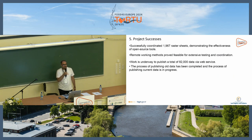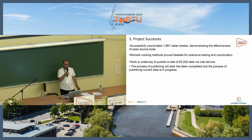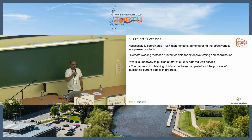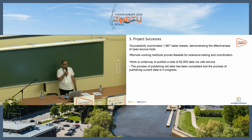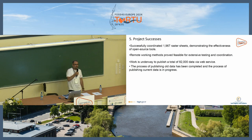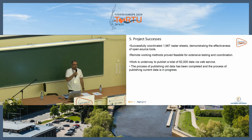We have successfully coordinated 1,967 raster sheets, demonstrating the effectiveness of open source tools. Work is underway to publish a total of 82,000 data items via web service using GeoServer. The process of publishing old data has been completed, and publishing of current data is in progress.